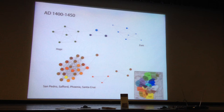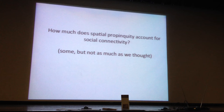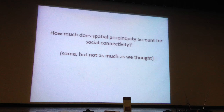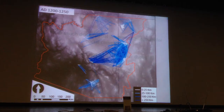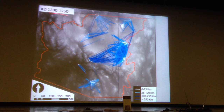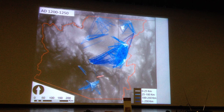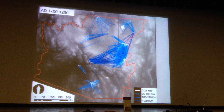We can see relatively where sites are more central, but let's look more closely at how much spatial propinquity accounts for social connectivity. The answer is: some, but not as much as we thought.